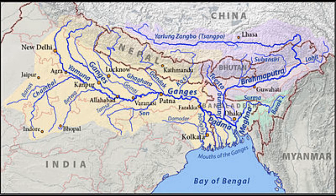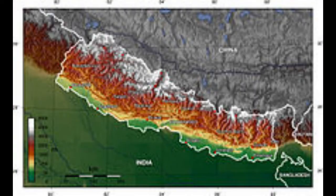Himalayan rivers while flowing down deposit gravel and pebble sediments in a narrow belt of eight to sixteen kilometers in width, found parallel to the foothills of the Shivaliks — that is, next to the third range. This feature is known as Bhabar. Bhabar is porous in nature. Porous means something that allows the flow of water and air through it.